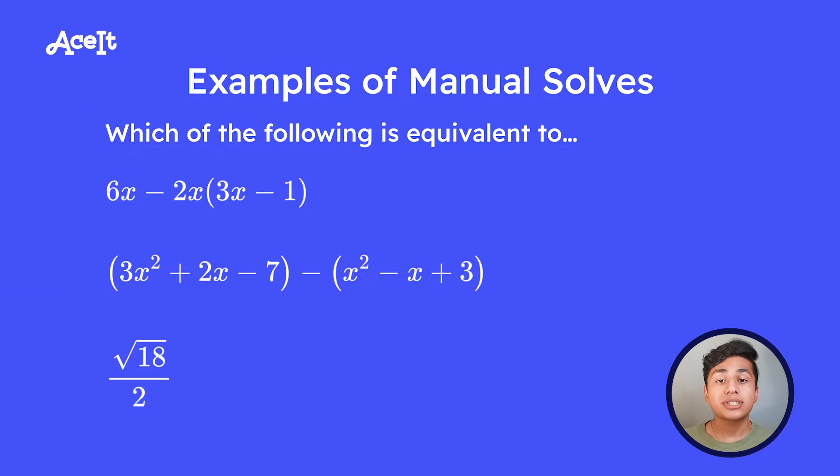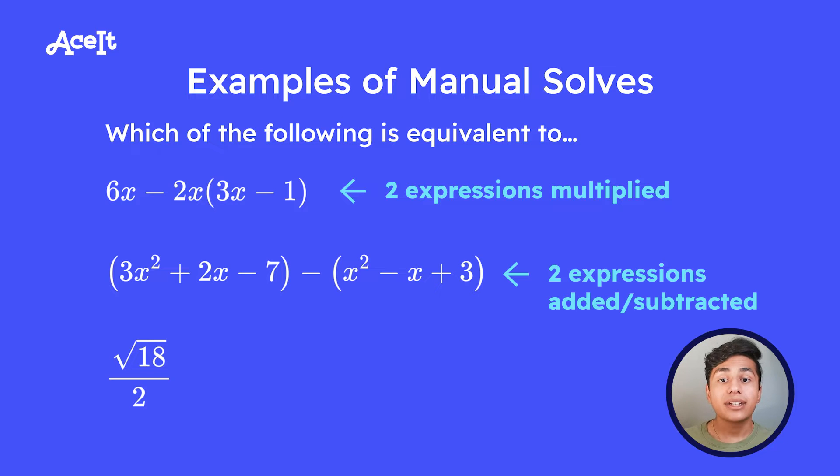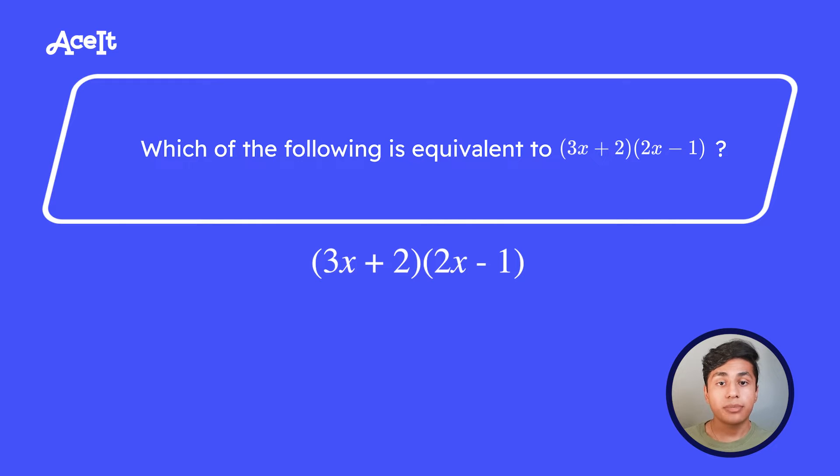So here are some examples of questions that you'll typically have to manually solve for. You know to manually solve usually when you see two expressions that are being multiplied, added, or subtracted. And if there's no variables, that's also a telltale sign that you're probably going to have to manually solve. So let's take a look at this example problem here.